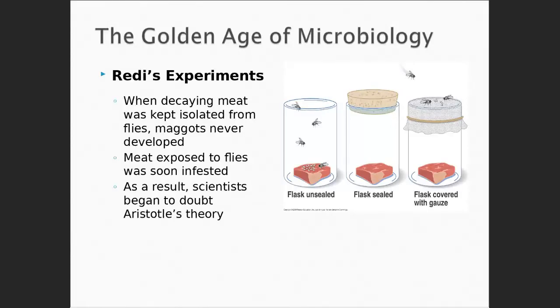We stopped last time talking about some of the different characteristics of the microbes. So can somebody tell me how bacteria are classified? They're prokaryotic, and what else? The peptidoglycan — the cell wall. That's right, very good.